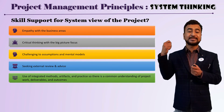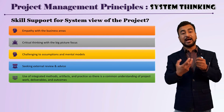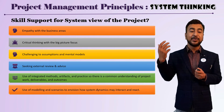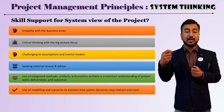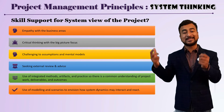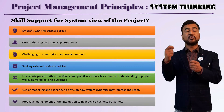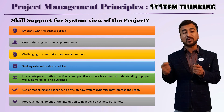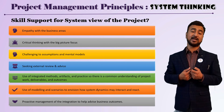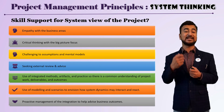Take a collective 360-degree approach and use integrated artifacts and practices that incorporate all those viewpoints. Use modeling and scenarios to ensure the system is demystified and you have a holistic understanding. Finally, proactive management is required to implement system thinking. With that skill set, you can implement system thinking as one of the principles of PMBOK version 7.